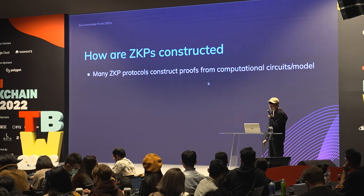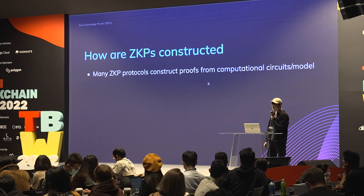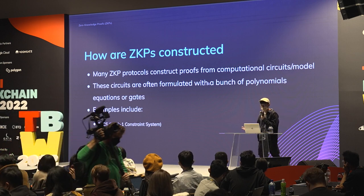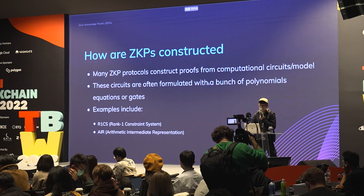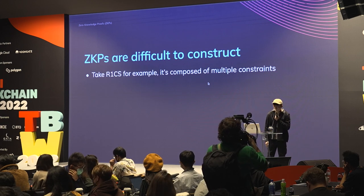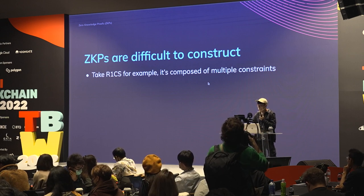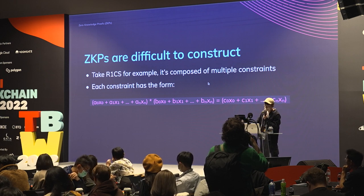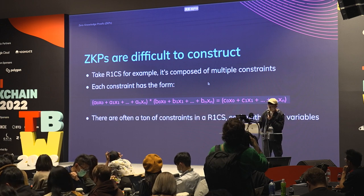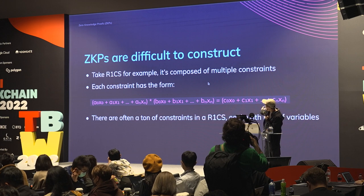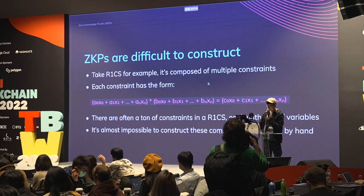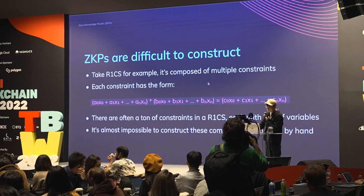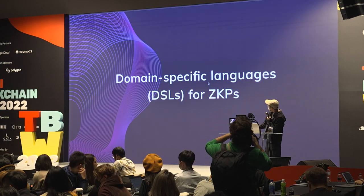Many ZKP protocols construct proofs from computational circuits and models, and these circuits are often formulated with polynomial equations or gates. Examples include R1CS or AIR. The problem is these ZKPs are really difficult to construct — R1CS has a bunch of constraints composed of three linear polynomials, and there are often tons of them with lots of variables, making it almost impossible to construct these proofs by hand.